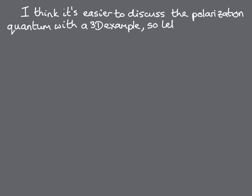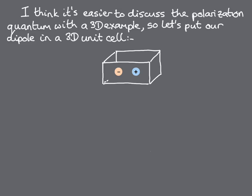I think it's easier to discuss the polarisation quantum with a three-dimensional example, so we'll put our dipole in a 3D unit cell with a lattice vector of length A in the direction of the polarisation, here it's the Z direction, and unit cell volume V. In anticipation of what's coming next, we'll write the charges on our ions in terms of the electronic charge E, and assume that the anion has a charge minus E and the cation a charge plus E.